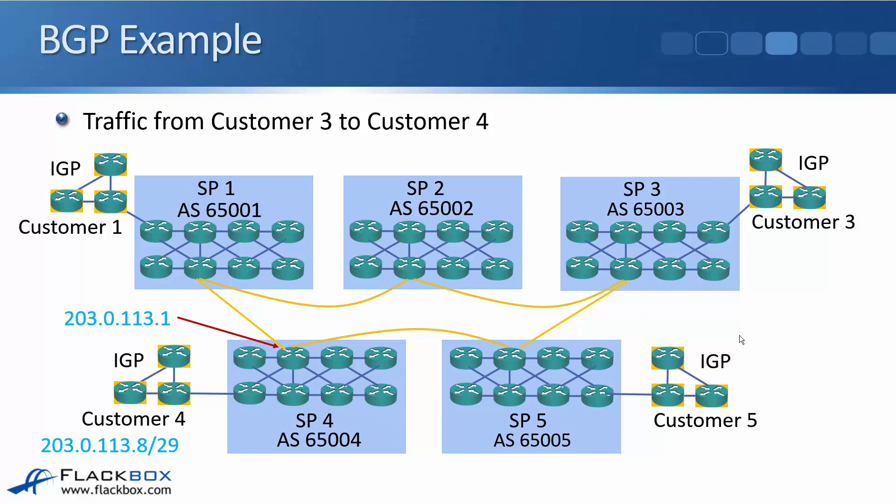That documentation range is just a single /24, so it has to be chopped up into smaller networks. In this example, the customer has been allocated 203.0.113.8/29 by their service provider, which is service provider 4 using AS65004.